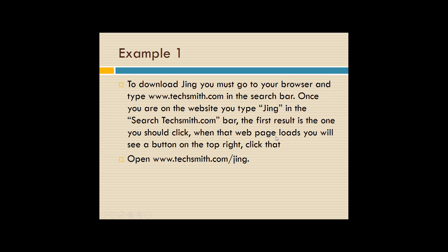Some examples of student writing on how to download Jing: 'To download Jing, you must go to your browser and type www.techsmith.com in the search bar. Once you're in the website, type Jing in the search bar. The first result is the one you should click. When the web page loads, you'll see a button on the top right. Click that.' The best way to write it is: 'Open www.techsmith.com/jing.' That takes you to the exact location where the download is. In instructions, you never want to ask your audience to search — they might do the search differently and come up with different answers. Whenever possible, tell them exactly where to go.